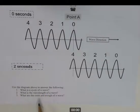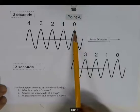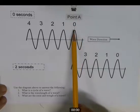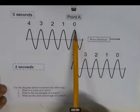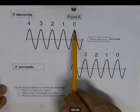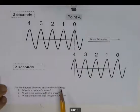Write your answers on lined paper, skipping a line between questions — that's how you'll need to do it on the AP exam. A cycle is one complete movement of the wave. If you start at crest zero and go down and back up to crest one, that's what you'd see — down and back up — that is one cycle, from the top of one crest to the top of the next.